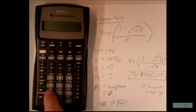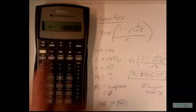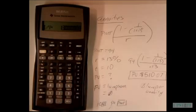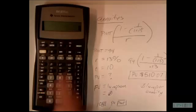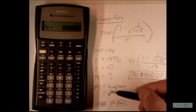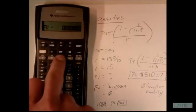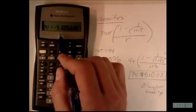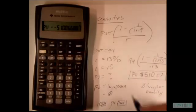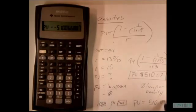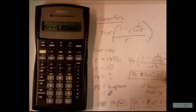We have an interest rate of 13%, so 13 is our I over Y. We have a zero in our future value, and notice we've gotten all these things in except for present value, so we're going to hit compute, present value. And look at that, we have a present value of 510.07, the exact same number that we came up with in this case right here.